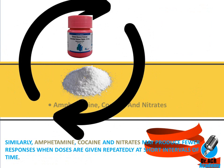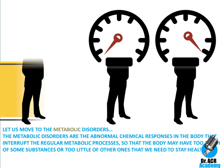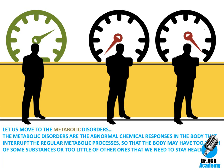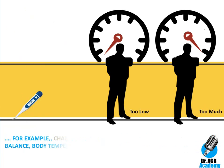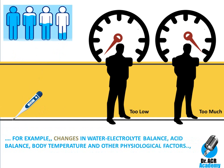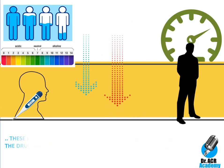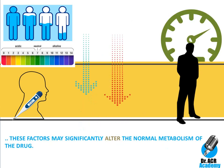Metabolic disorders are abnormal chemical responses in the body that interrupt regular metabolic processes, causing the body to have too much of some substances or too little of others needed to stay healthy. Examples include changes in water-electrolyte balance, acid balance, body temperature and other physiological factors. These factors may significantly alter the normal metabolism of a drug.